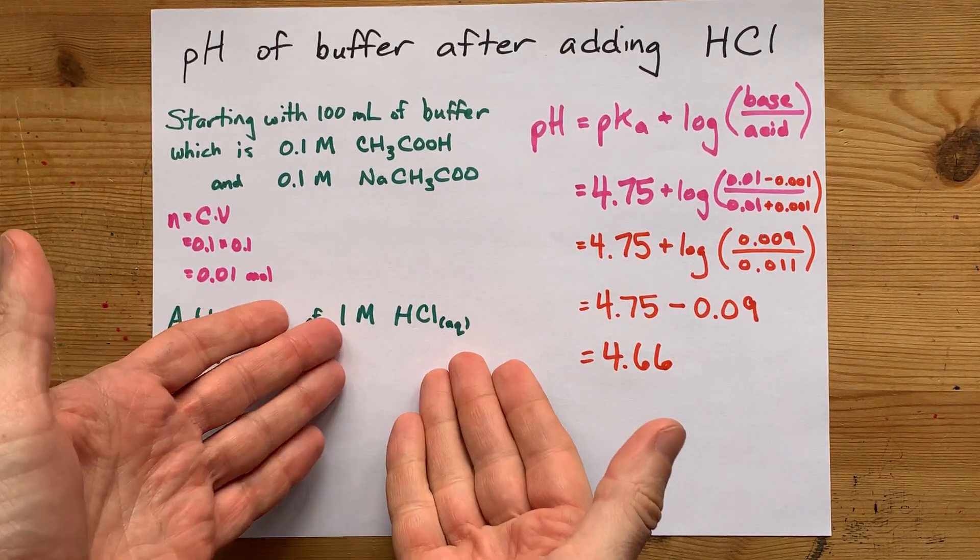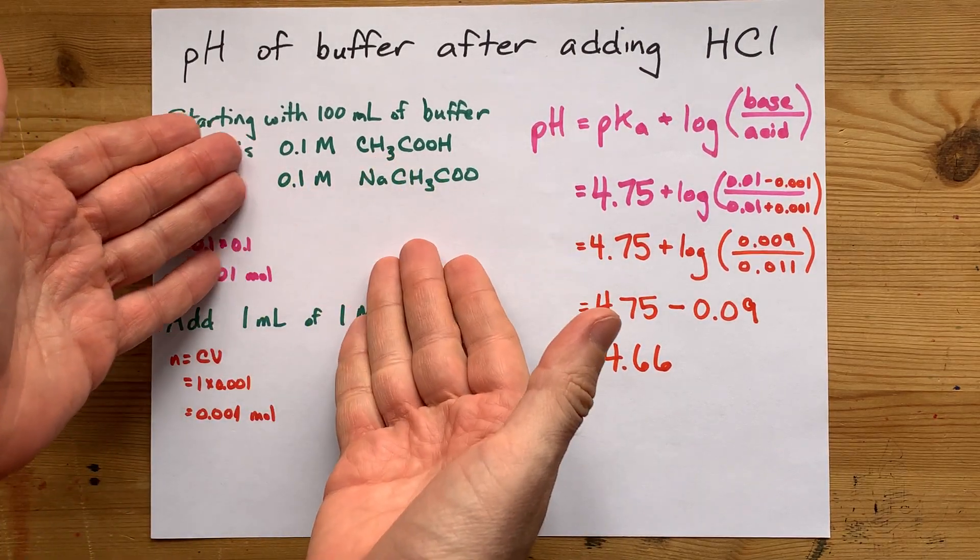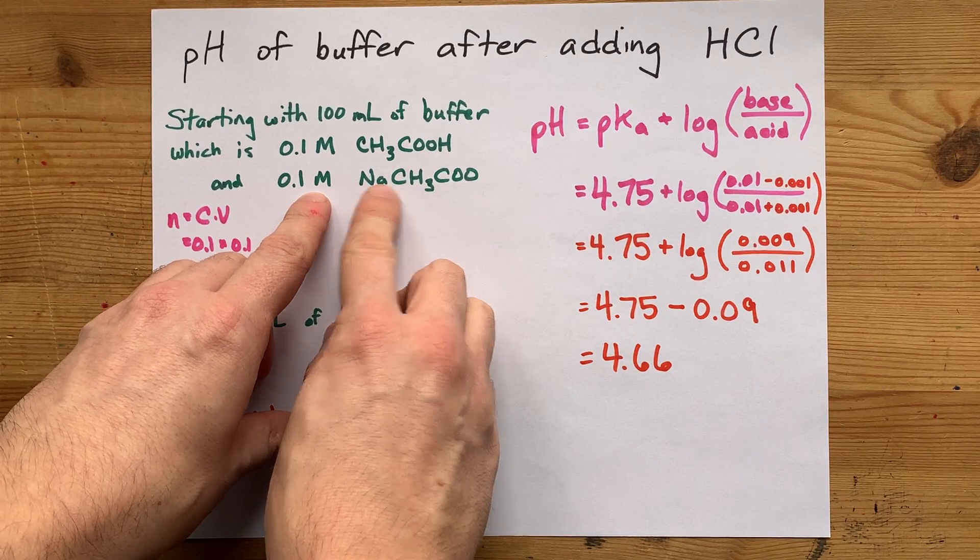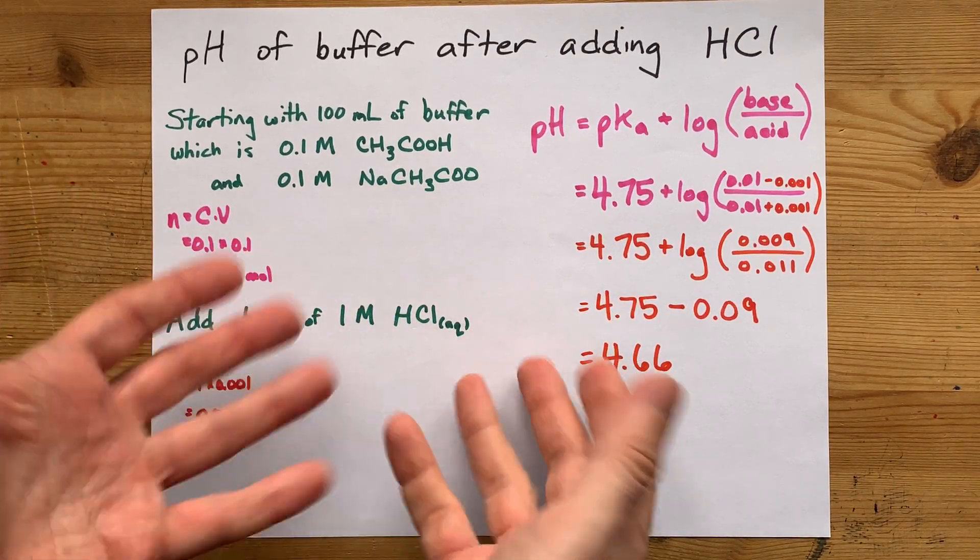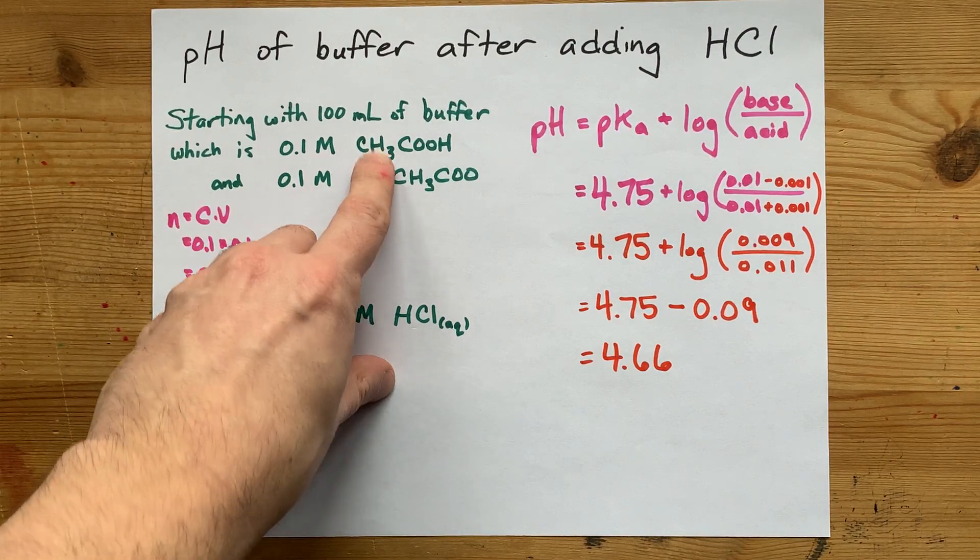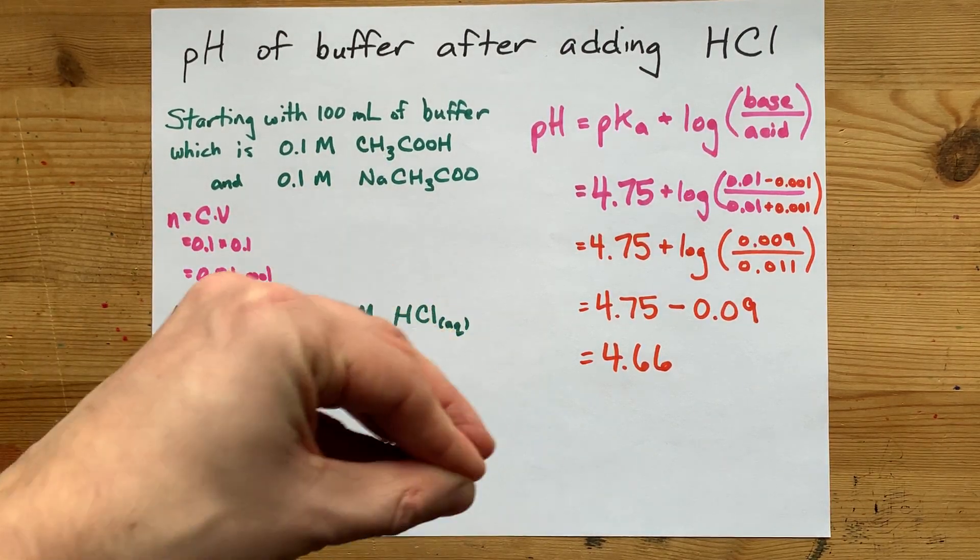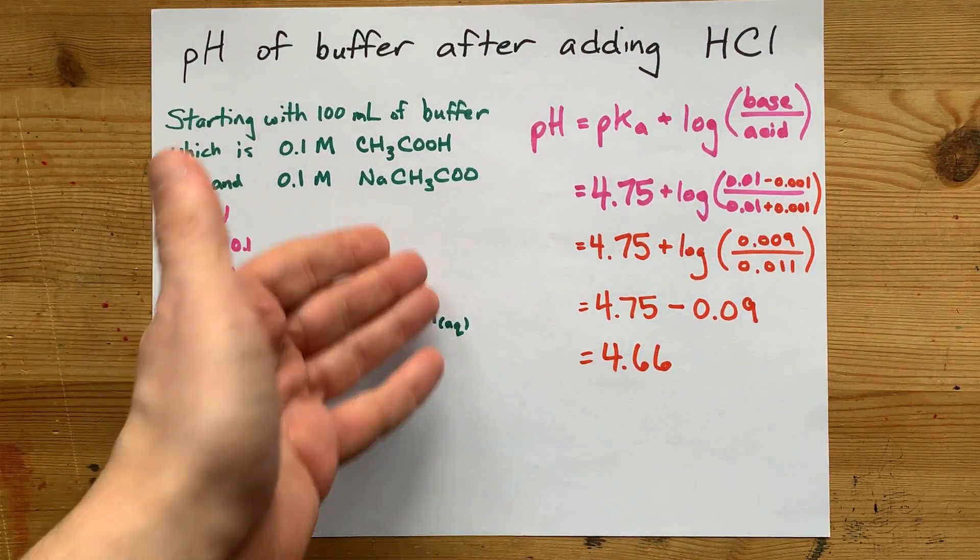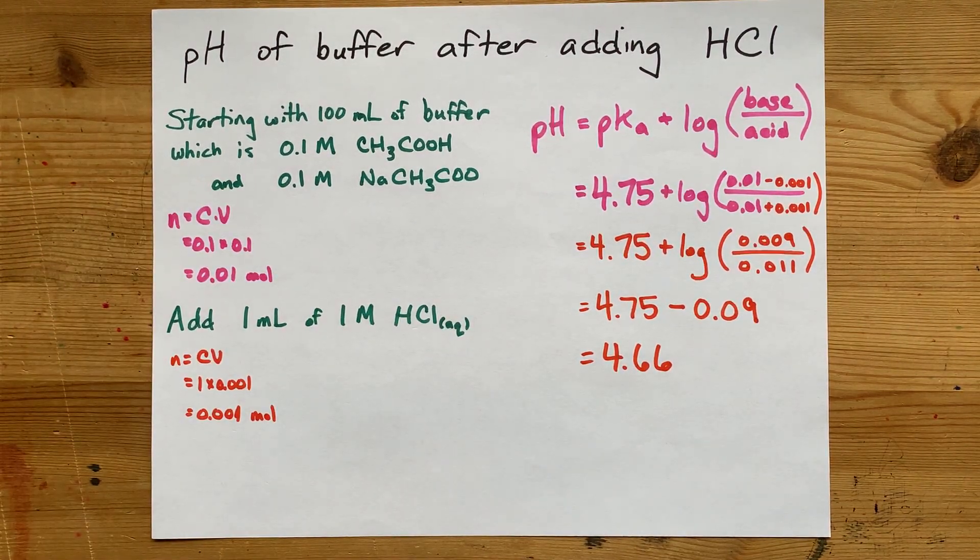Of course, if you add enough strong acid, you'll overwhelm the buffer entirely. And then at some point you might not even have the conjugate base in solution, and then you don't have a buffer at all. But as long as you have some of both, the solution should be a little bit resistant to pH changes. Thanks for being with me, and best of luck.